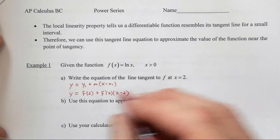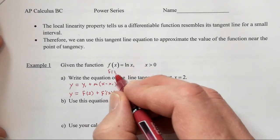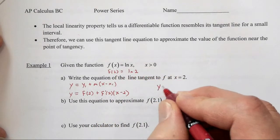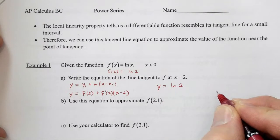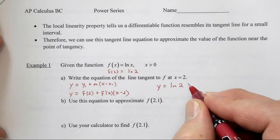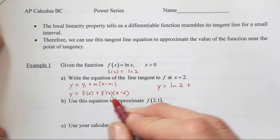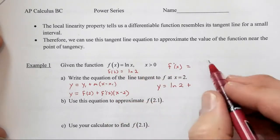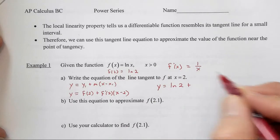So we need f of 2, and if we plug in 2 to our function, we literally have the natural log of 2. So we'll have y equals the natural log of 2, and we're going to add to that. Now we need f prime of 2, so we need f prime of x, and that's a quick derivative to get. We know the derivative of the natural log of x is 1 over x.